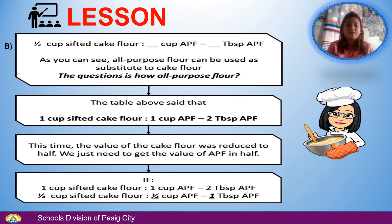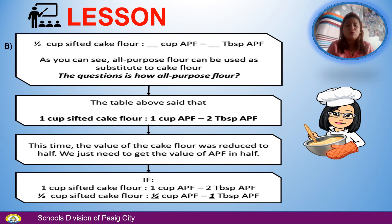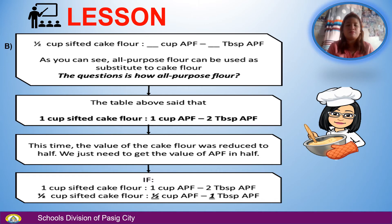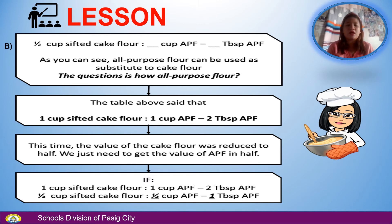Example B: one-half cup sifted cake flour equals blank of all-purpose flour. All-purpose flour can be used as a substitute for cake flour. The table says 1 cup sifted cake flour equals 1 cup all-purpose flour minus 2 tablespoons. So one-half cup sifted cake flour equals one-half cup of all-purpose flour minus 1 tablespoon of all-purpose flour.